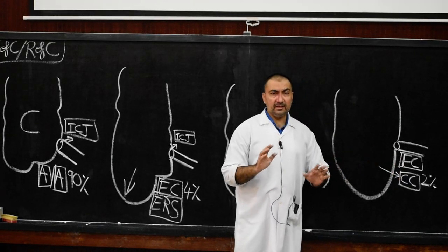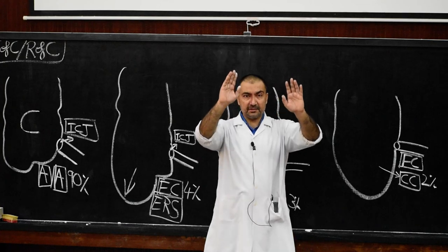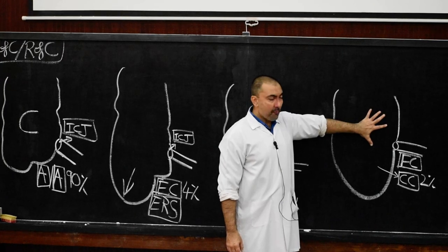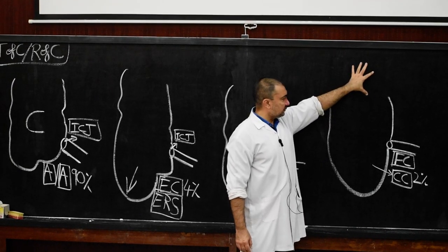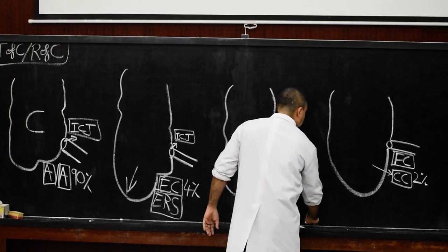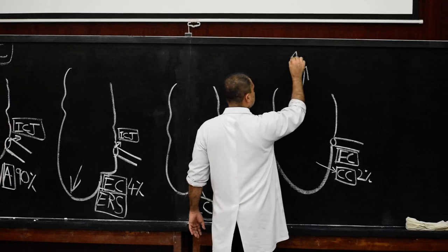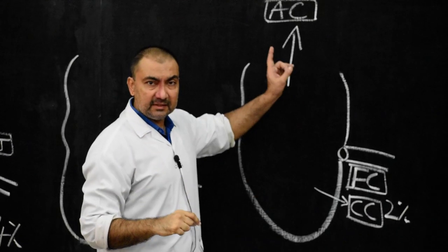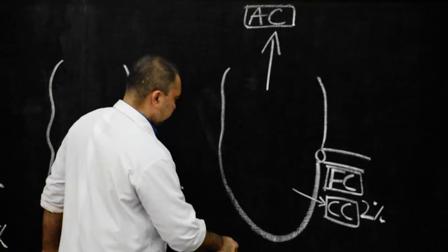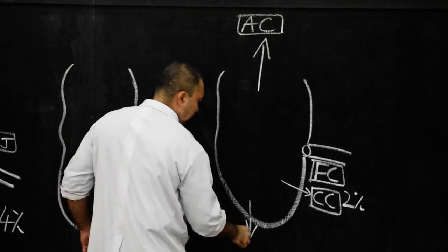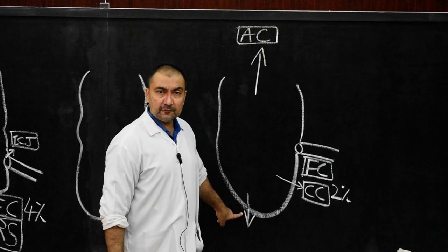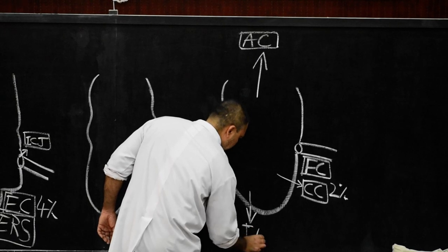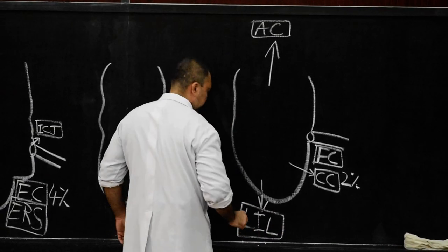Now, relations. Starting with superior relation: superiorly, the cecum will be continuous with the ascending colon — superior relation is with the ascending colon. Then inferiorly, it will be in relation with the lateral part of the inguinal ligament.